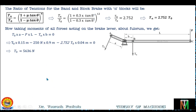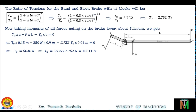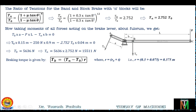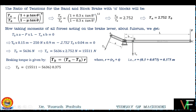Having calculated T0 and TN, we calculate the braking torque: Tb = (TN - T0) × R, where R = Rd + T = 0.3 + 0.075 = 0.375 m. Substituting: Tb = (15511 - 5636) × 0.375 = 3703 Nm. This is the braking torque on the band and block brake drum for the given configuration.